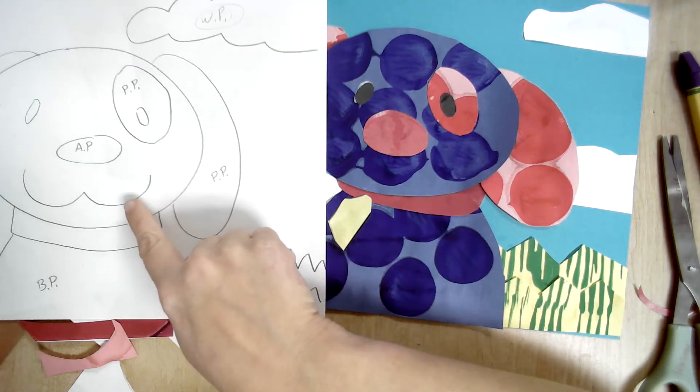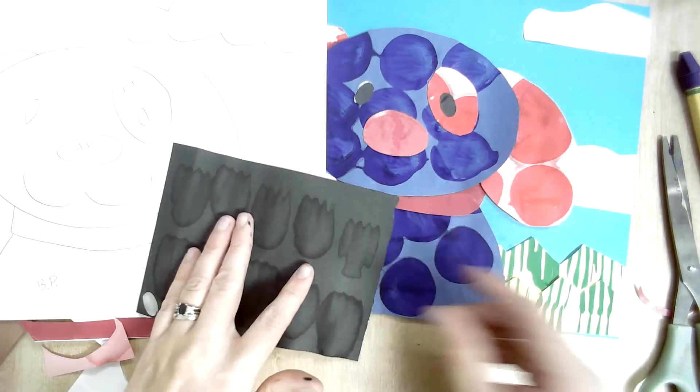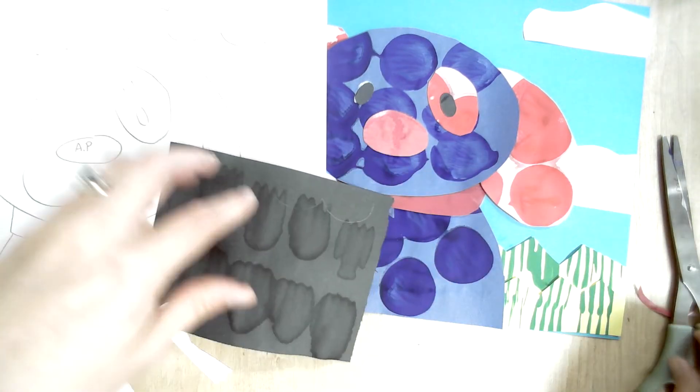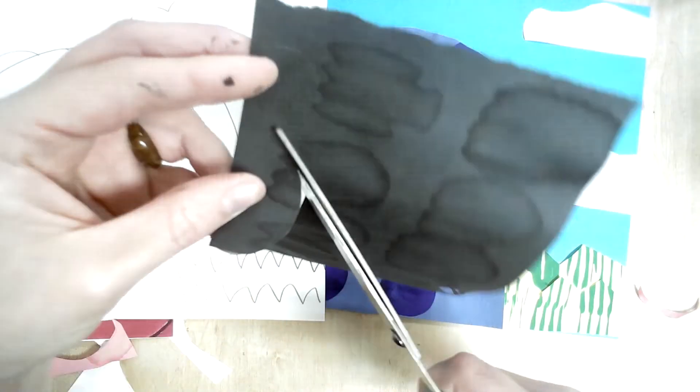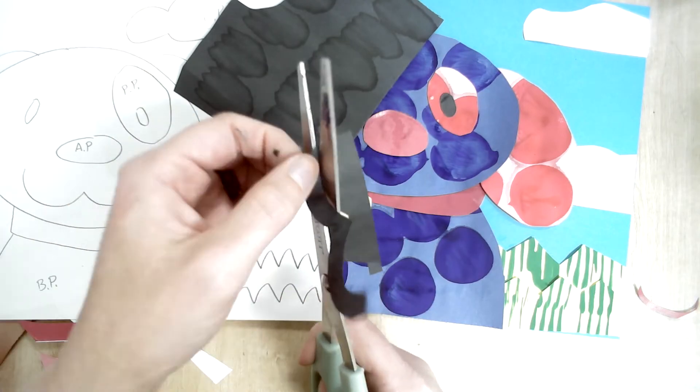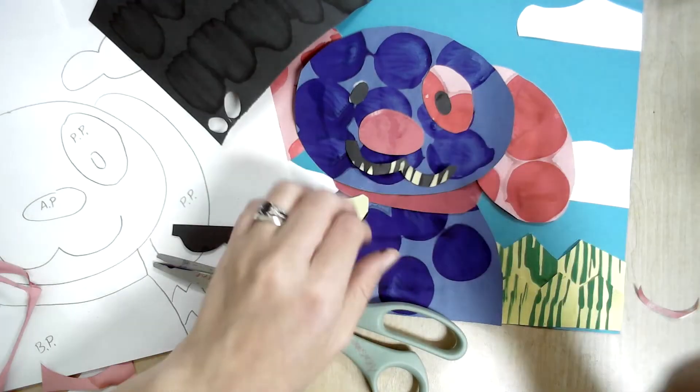His mouth is going to be the hardest shape. This is just a line. I'm going to draw up my smiley face. And then I'm going to make it thick by cutting around it. Lay it out. And then glue it down.